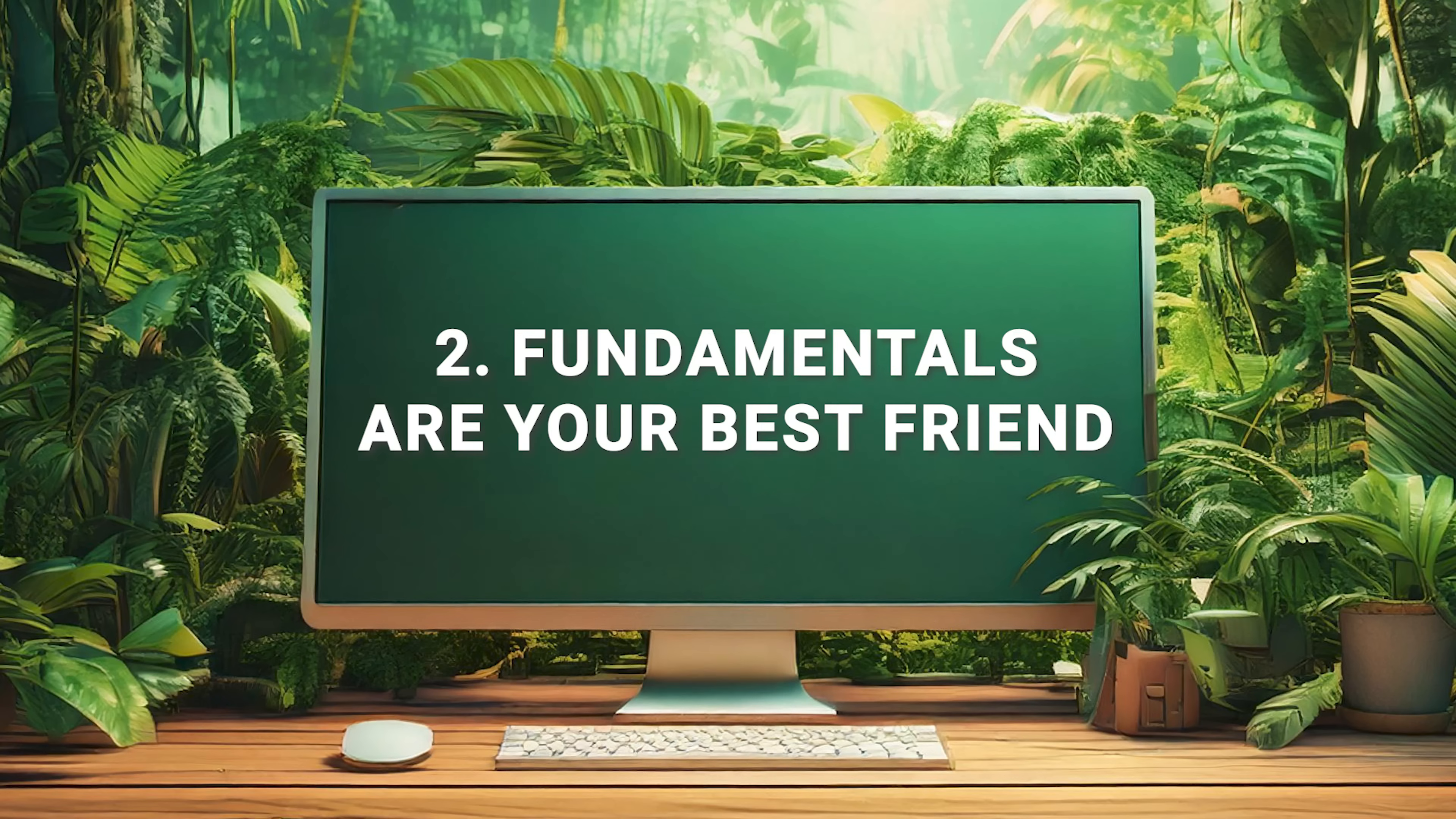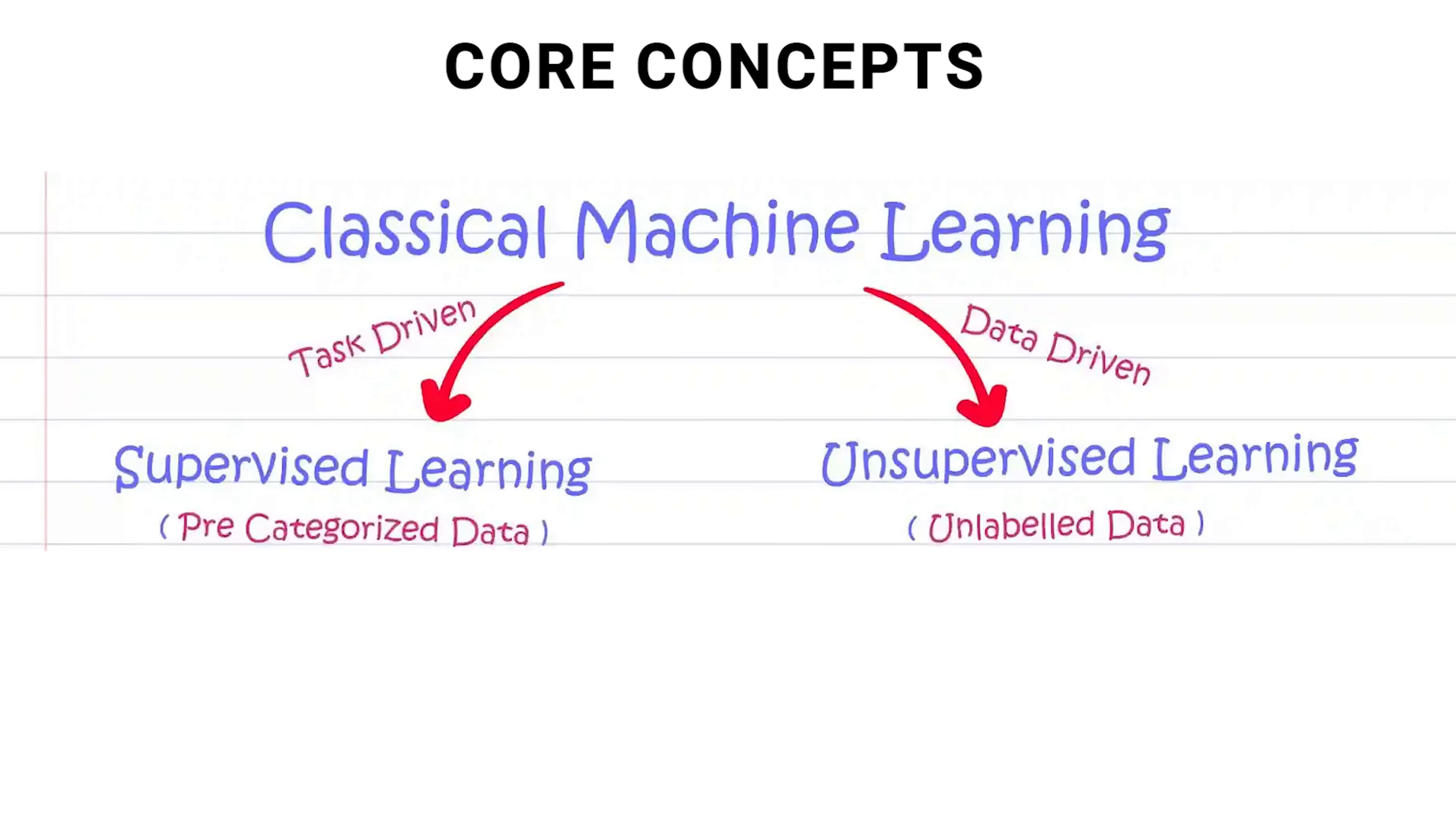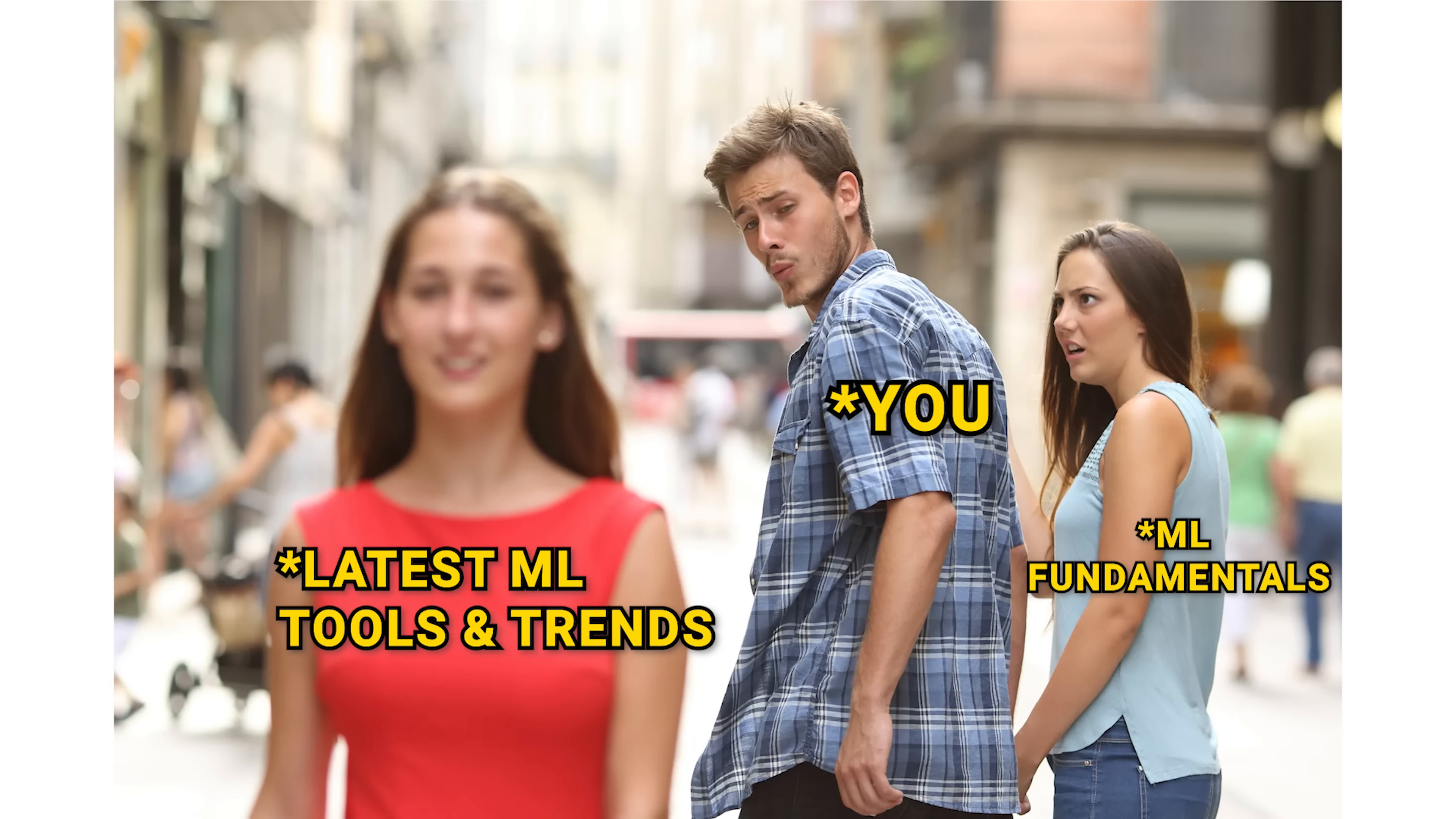Fundamentals are your best friend. In machine learning, it's tempting to jump straight into using popular frameworks like TensorFlow or PyTorch or even Scikit-learn, but mastering the core concepts, such as the difference between supervised and unsupervised learning, linear and logistic regression, loss functions, optimization techniques, and the bias-variance trade-off, is far more critical for long-term success. A solid grasp of these fundamentals allows you to adapt to new tools, solve complex problems, and build models from scratch when necessary. Don't chase the latest trends without first understanding the foundational principles that underlie every machine learning algorithm.